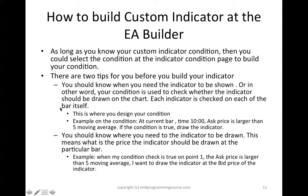So after you know when you should draw your indicators, then you should know where the indicator should be drawn. So the second tip is you should know where the indicator should be drawn. For example, once the condition is met, I want to draw the condition — let's say on the bar, maybe at the ask price or the bid price.